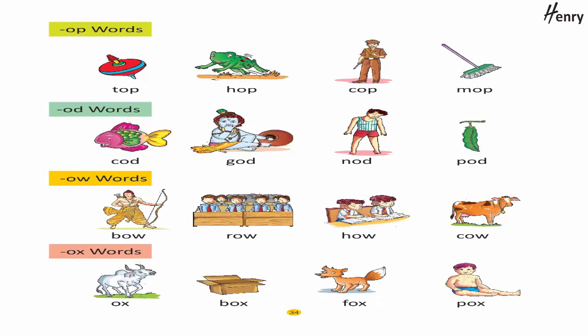-OD words: Got, Not, Pot. -OW words: Bow, Row, Cow.